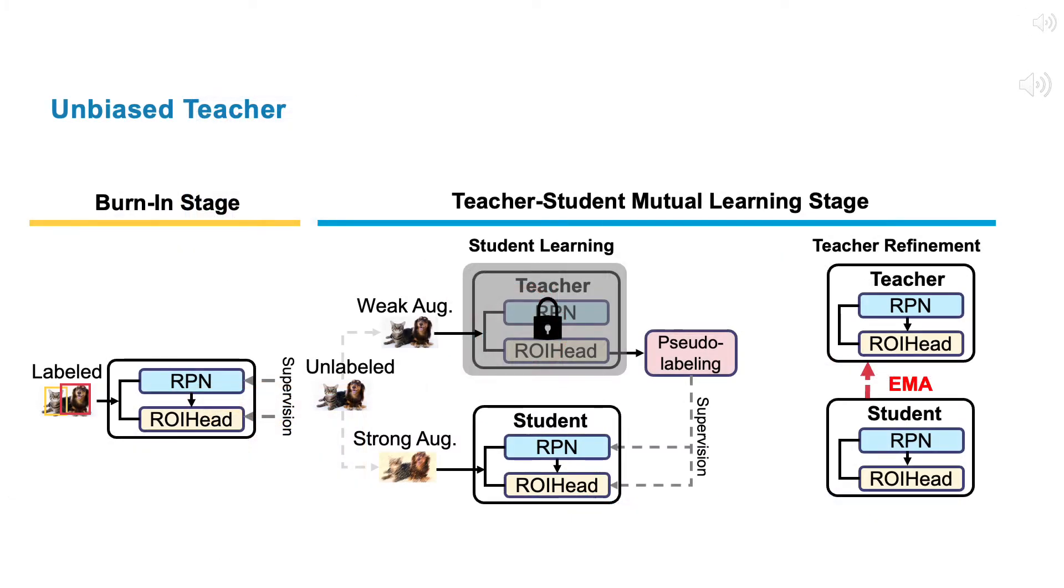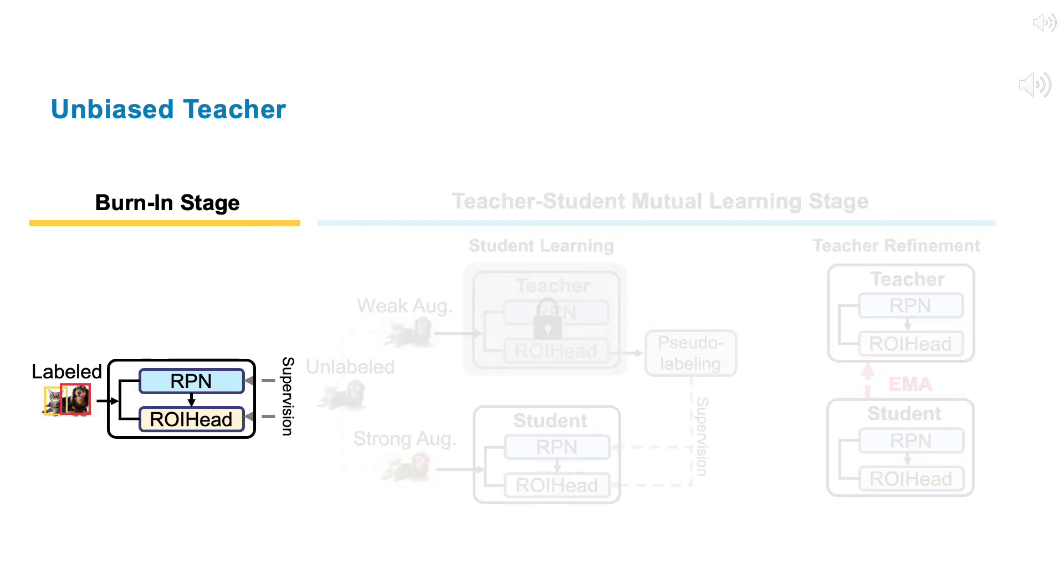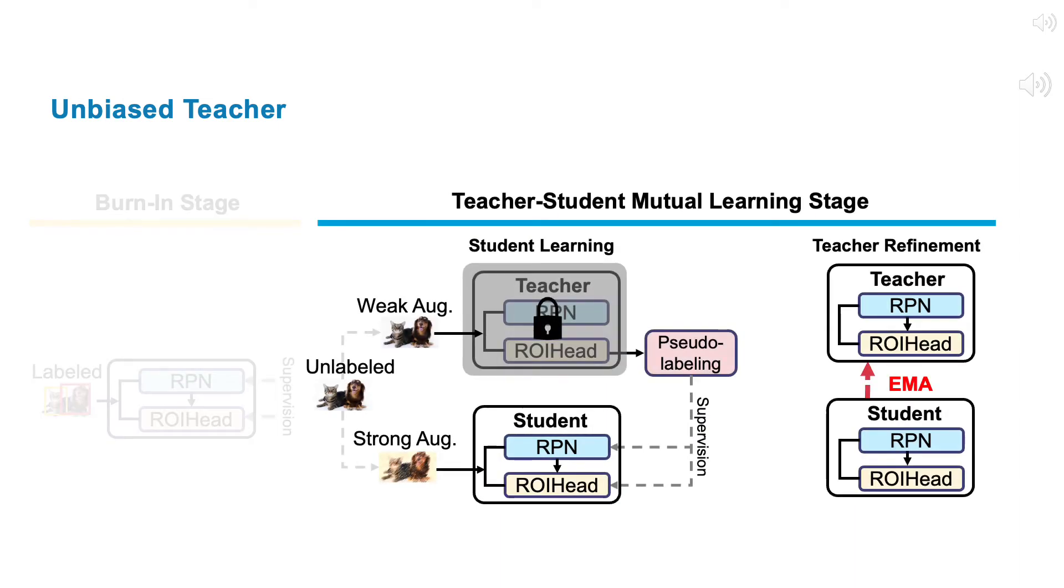We thus propose a general framework, an Unbiased Teacher approach, that jointly trains a student and a teacher in a mutually beneficial manner. Our framework contains two training stages: burn-in stage and teacher-student mutual learning stage.